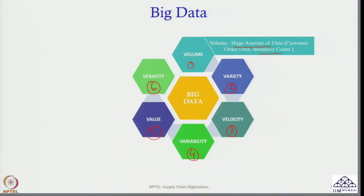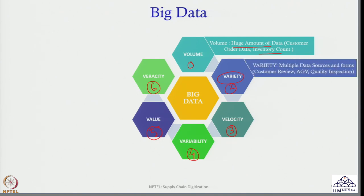The next V is variety, which means multiple data sources and forms. This could be image data, audio data, video data, text data, and so on. There are varieties of data which can be created, copied, consumed, and used for model development or decision-making purposes.